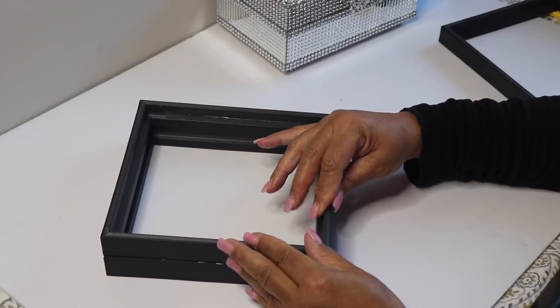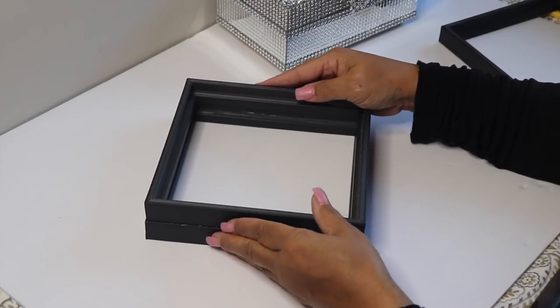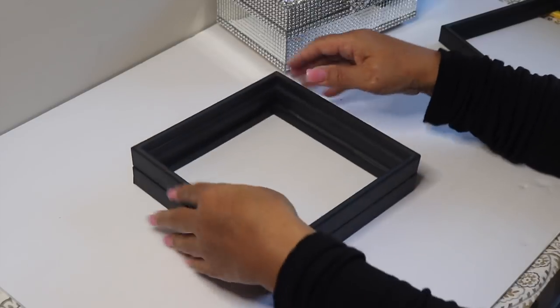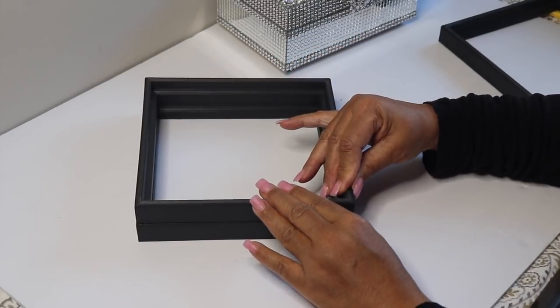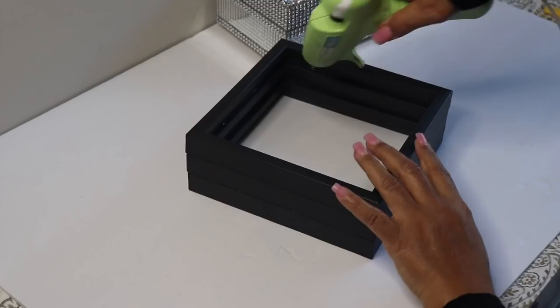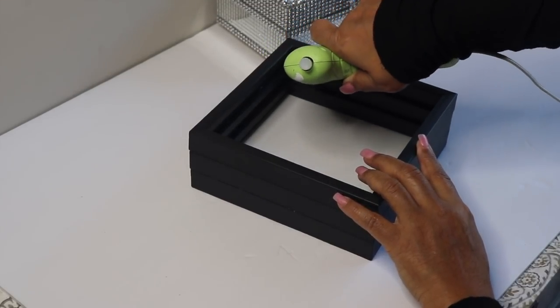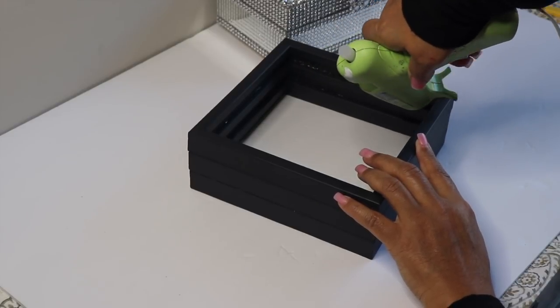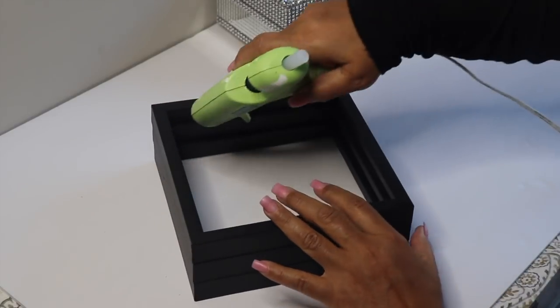I made sure that I lined up all three pieces evenly. I strengthened the box by adding hot glue to the seams. I applied the glue to the other side of the box as well.